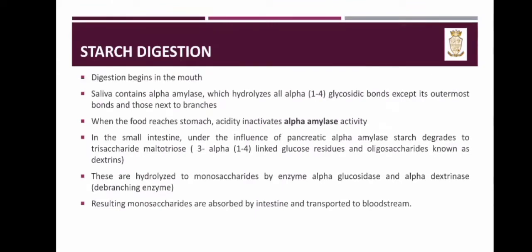Next is starch digestion. Digestion begins in the mouth — saliva contains alpha amylase, which hydrolyzes all alpha 1-4 glycosidic bonds except the outermost bonds and those next to branches. When food reaches the stomach, the acidity inactivates alpha amylase activity. In the small intestine, under the influence of pancreatic alpha amylase, starch degrades to the trisaccharide maltotriose, which consists of three alpha 1-4 linked glucose residues, and oligosaccharides known as dextrins.